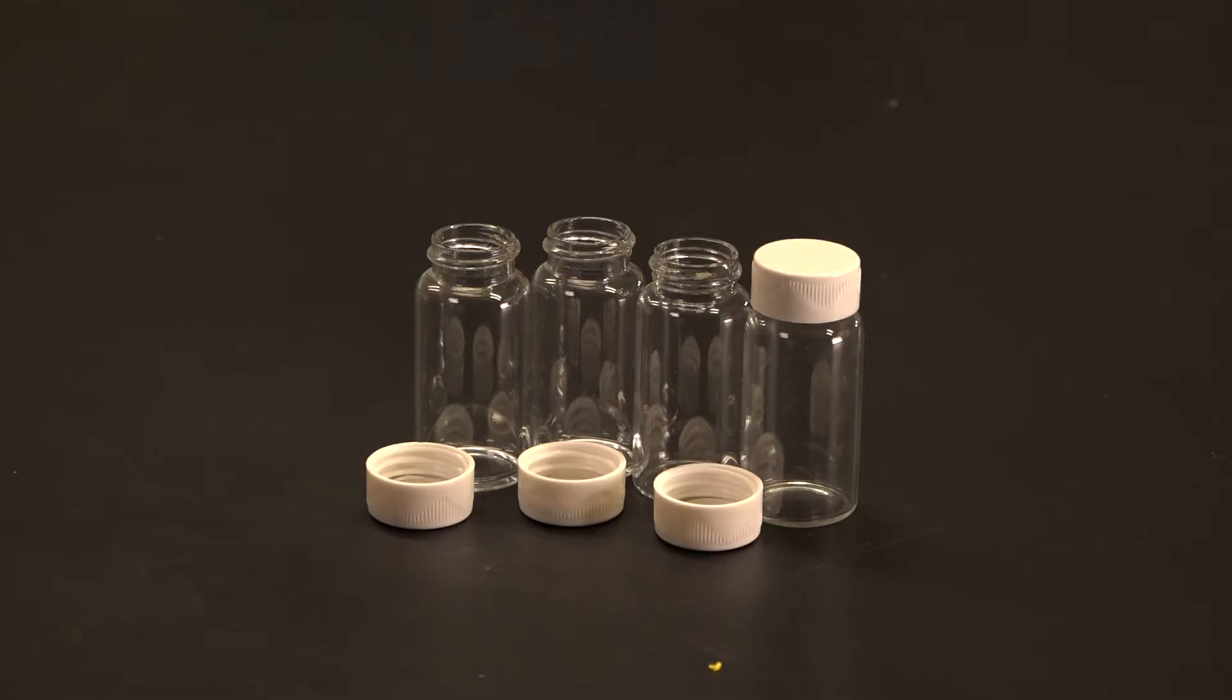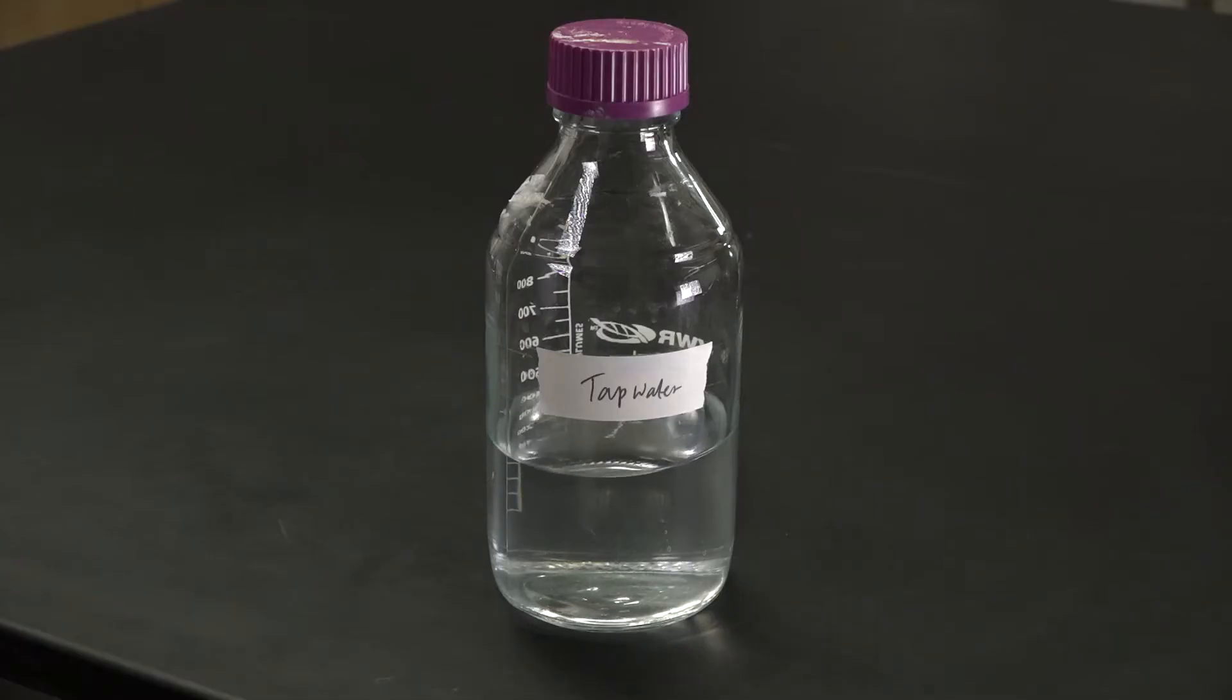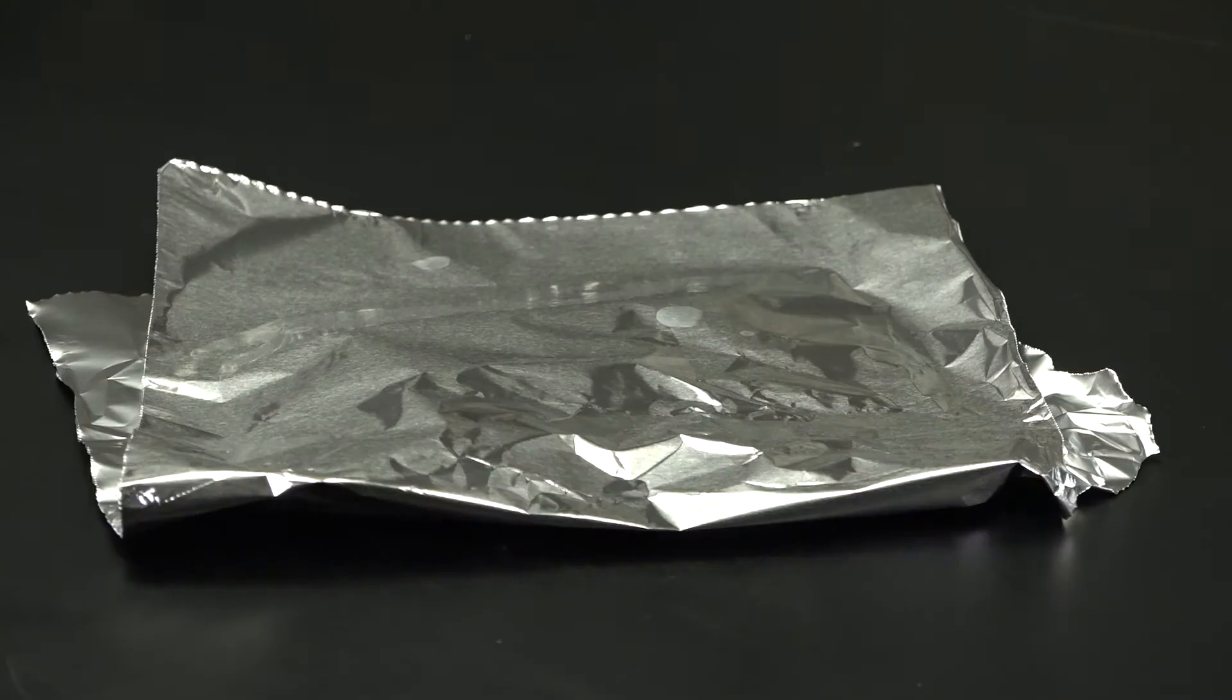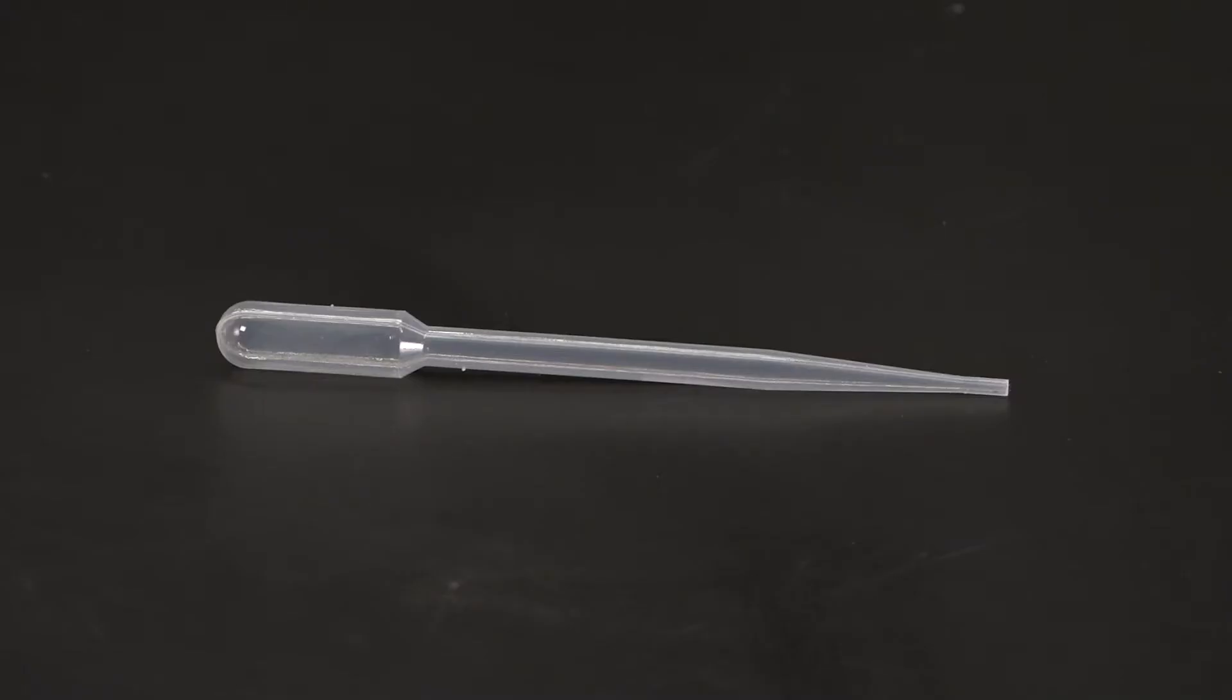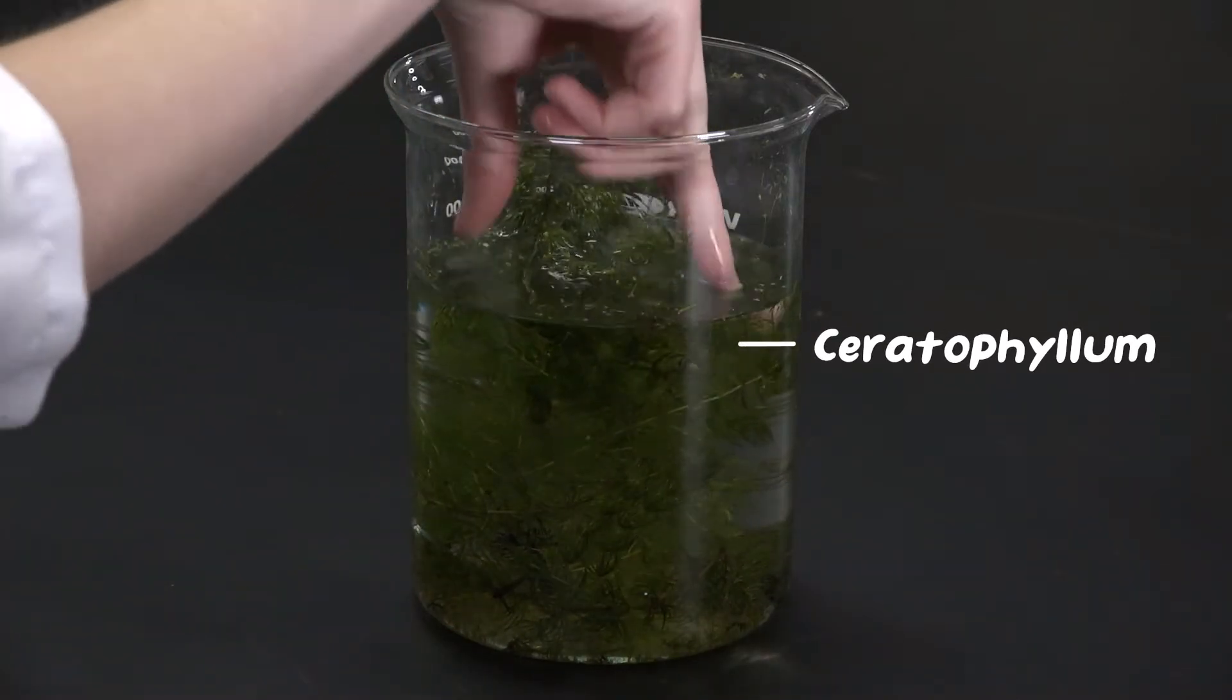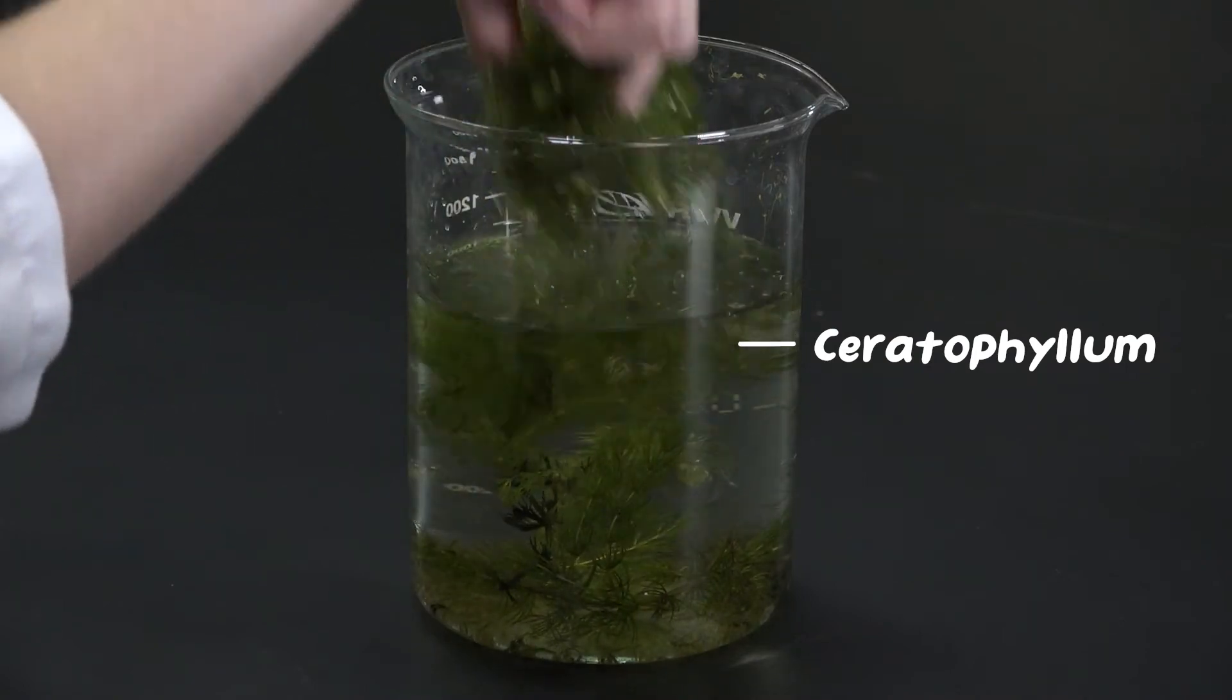Let's set up our very colorful experiment. You'll need four clear vials with tightly fitting lids, tap water around pH 7, bromothymol blue pH indicator, aluminum foil, a pipette, and a water plant. I'm using ceratophyllum, but any aquatic plant will do. Just make sure you aren't using an invasive species.